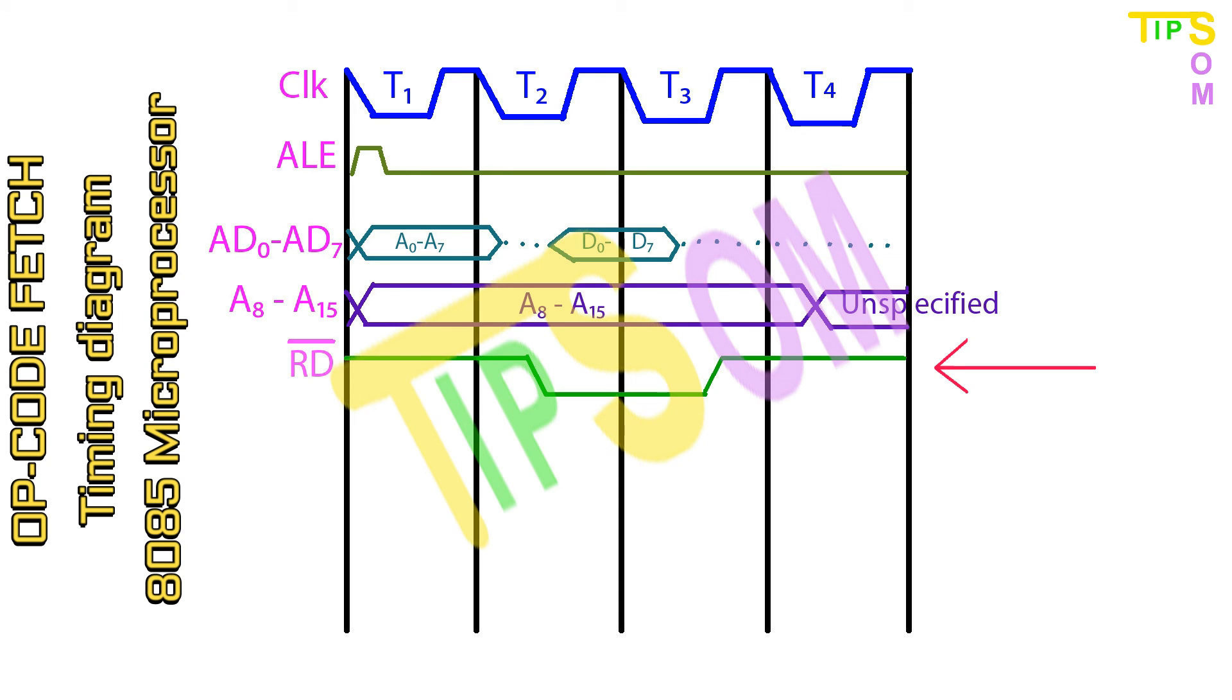Next one is the RD bar. Here as mentioned, when the data operation is going on, the RD will be low. Here it is the same thing. When the D0 and D7 operation is going on, the RD bar is low. And the rest of the time RD bar is high.